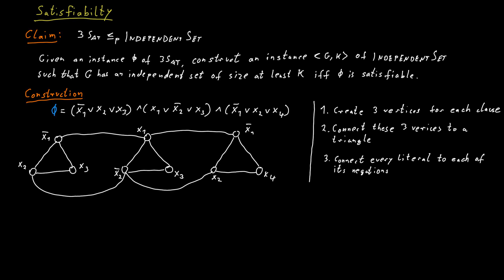This is the entire construction. Now we need to think about what value for k we should choose. So what should we demand? How large should our independent set be? If I want to satisfy the formula phi, how many clauses do I have to satisfy? This is exactly the value for k that we should choose. So our k will be the number of clauses in the formula.